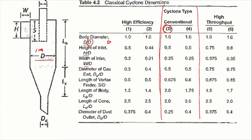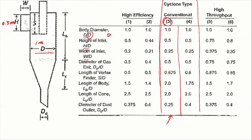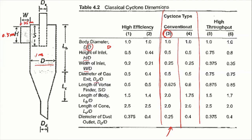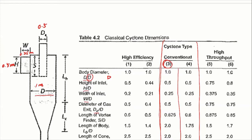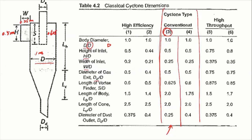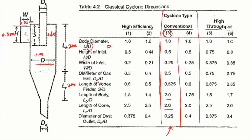We're going to use number three. If the diameter is one meter, then H over D is 0.5, so the height is 0.5 meters. The width of the inlet, W, is 0.25. The exit diameter of the gas exit, DE, is 0.5. The length of the vortex finder, S, is 0.625. The length of the body is ratio 2, so 2 meters. The length of the cone is also 2 meters. If we know the body diameter, we can calculate all other dimensions.